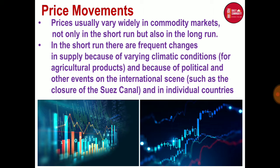In the short run, we can frequently see changes in supply and demand due to climatic conditions affecting agricultural products, and because of political or other international events. For example, recent events such as the closure of the Suez Canal, or individual country problems such as strikes.